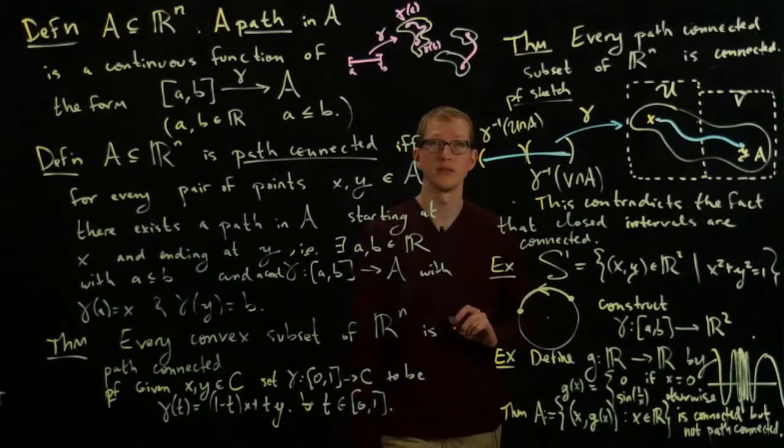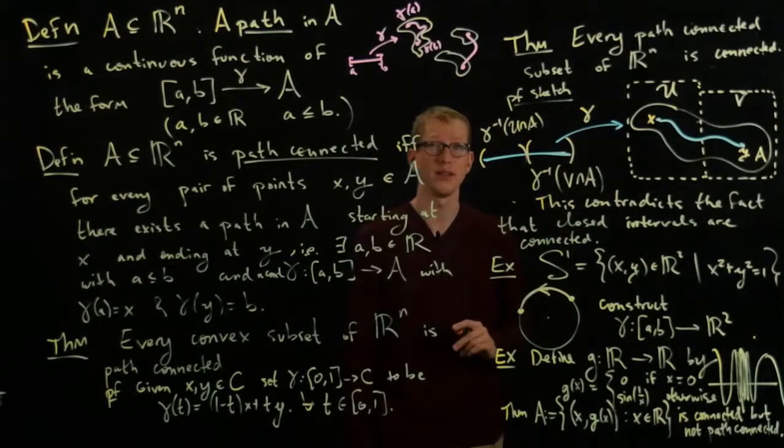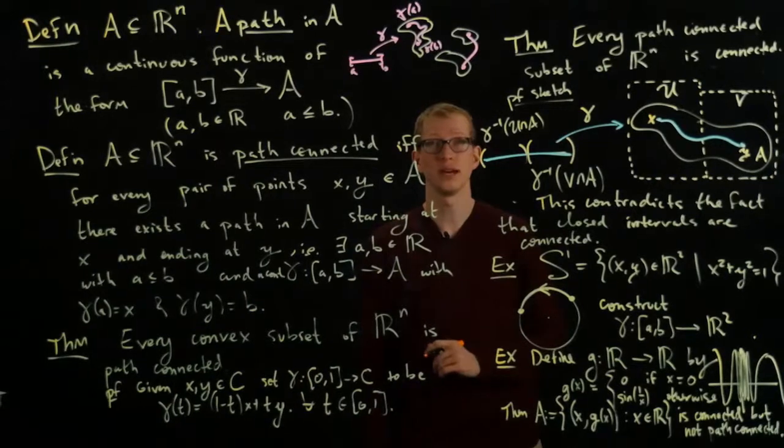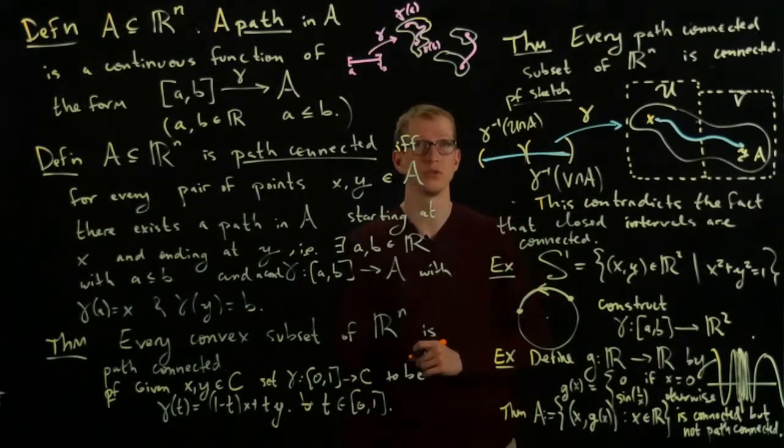So there are examples of connected subsets of Rn that are not path connected, as long as you allow n to be greater than or equal to 2.